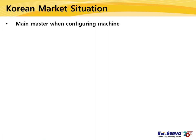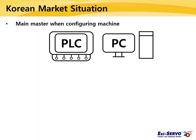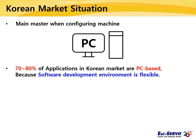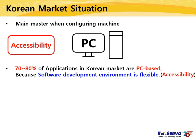Before introducing the Easy IO Ethernet DIO product, I would like to explain Fastek's Ethernet products with the example of the Korean market situation. When a customer configures a machine, a PC or PLC is used as the main master. In the Korean market, this main master is an industrial PC usually — almost 70-80% of them compose their machine based on PC. The main reason is that the software development environment is flexible when controlling a machine, and accessibility is good, since customers can easily configure machine programs in a Windows-based programming environment by directly connecting to a PC. Most customers in the Korean market prefer and use Fastek's Ethernet products.